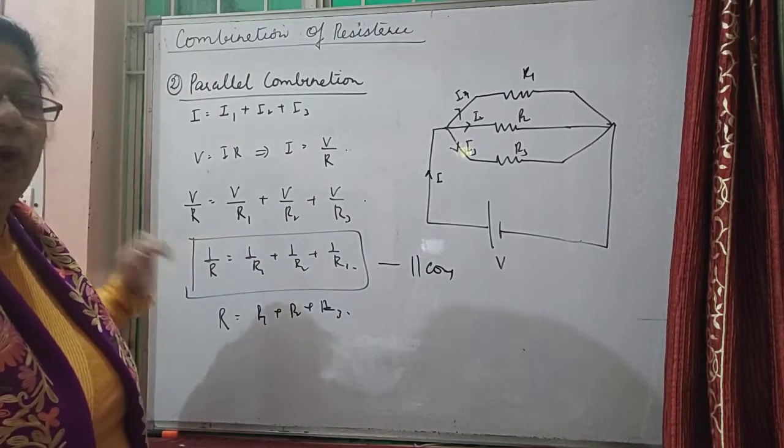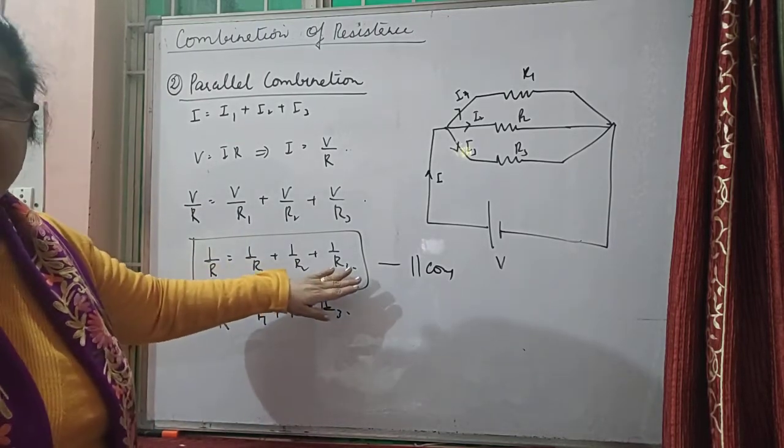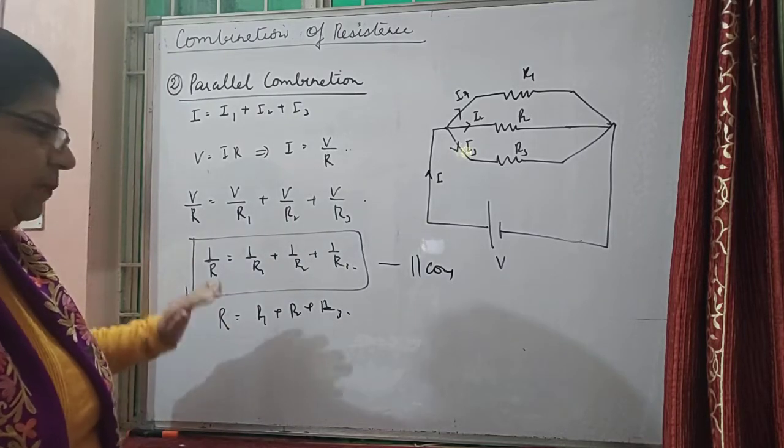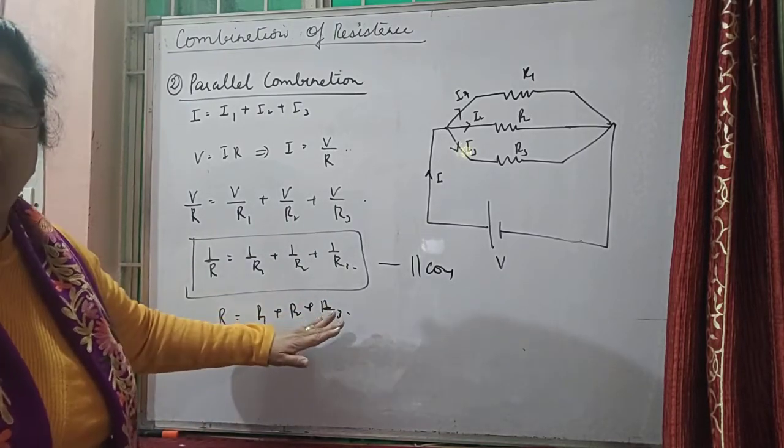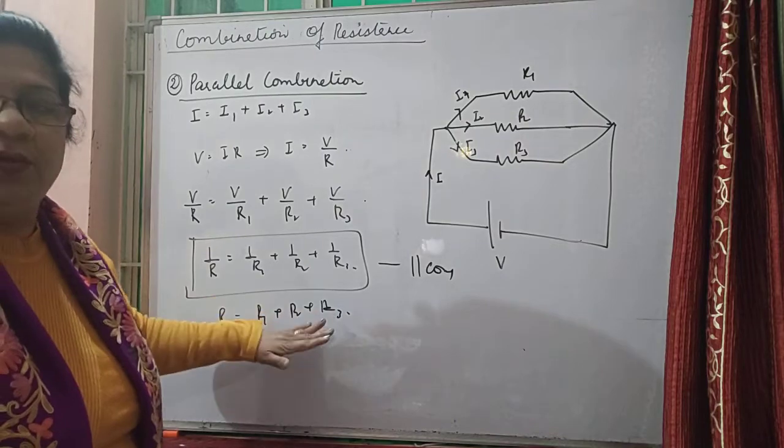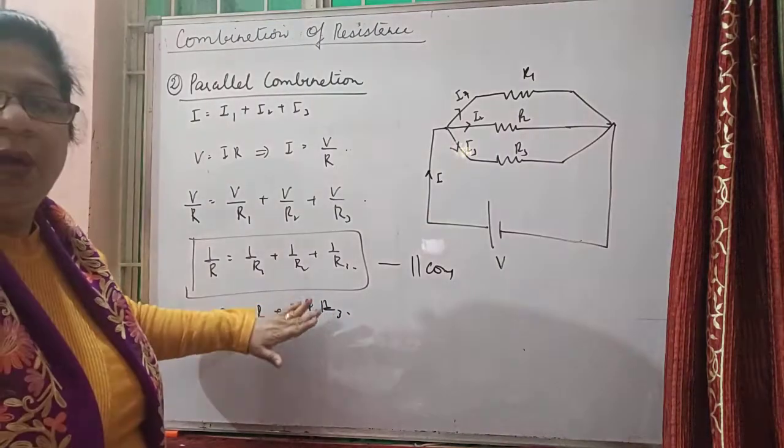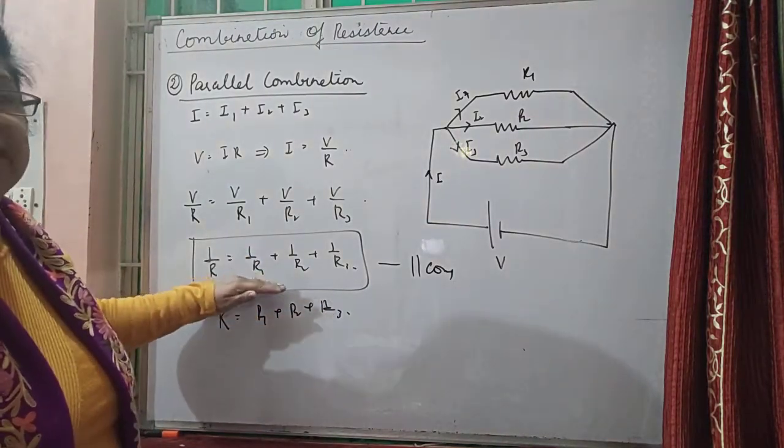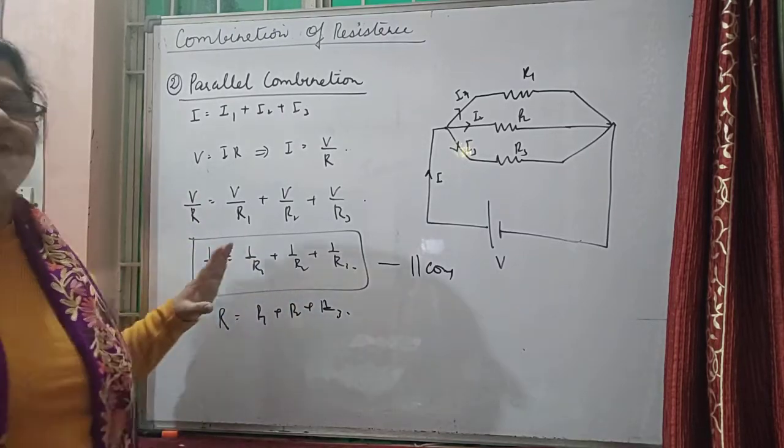Equivalent resistance will always be smaller than any of the separate resistances in parallel. In series, the equivalent resistance will be greater than the biggest resistance also. So the equivalent resistance is lower in the parallel combination.